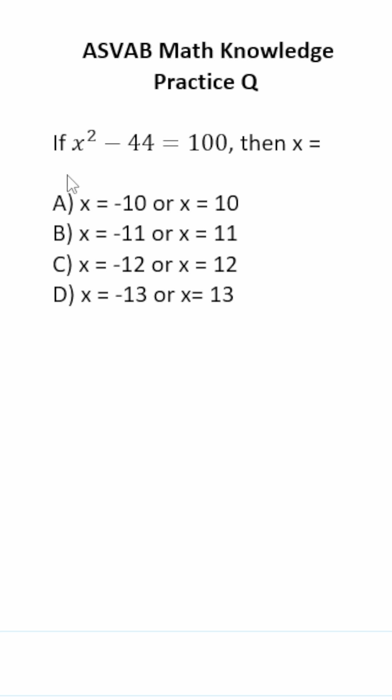If x squared minus 44 equals 100, then x equals. There are two ways to solve this one. You could recognize that you have the difference of two perfect squares here, or you could solve it algebraically.